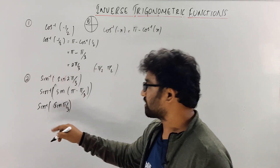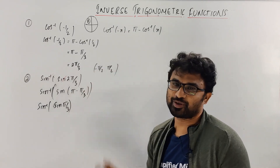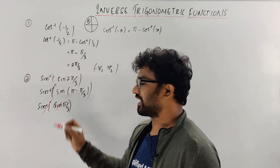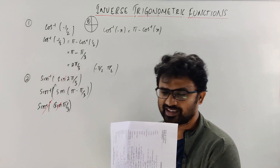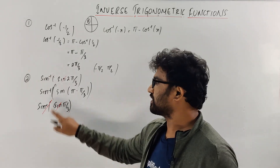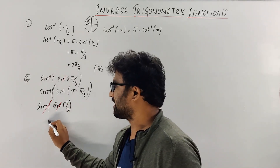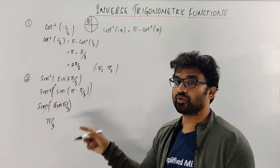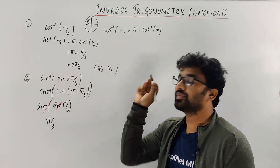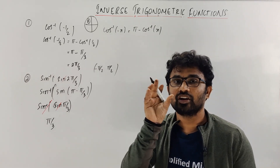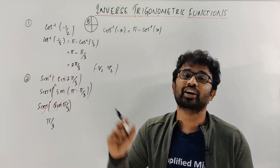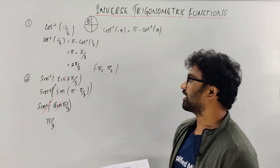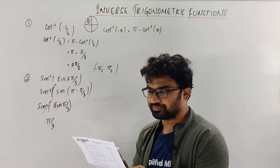Since π/3 lies between −π/2 and π/2, now these two get cancelled. It is not just a cancel — you are finding the inverse of the function. So the answer is π/3. That is very simple. The key concept is restricting domain — domain restrictions. Let's take some more questions.